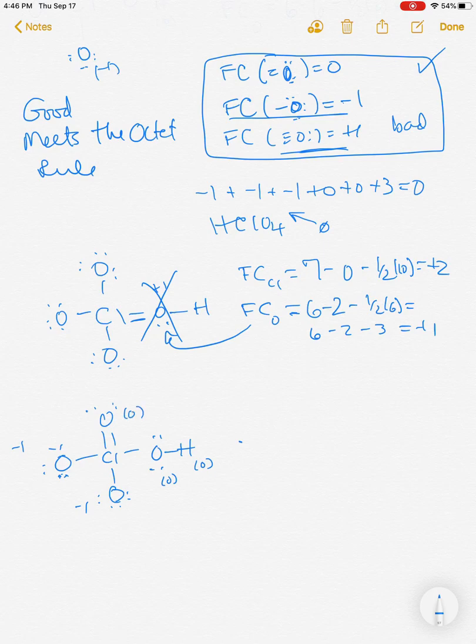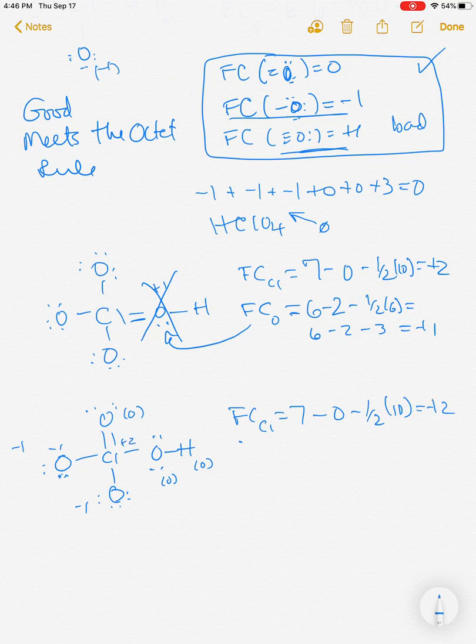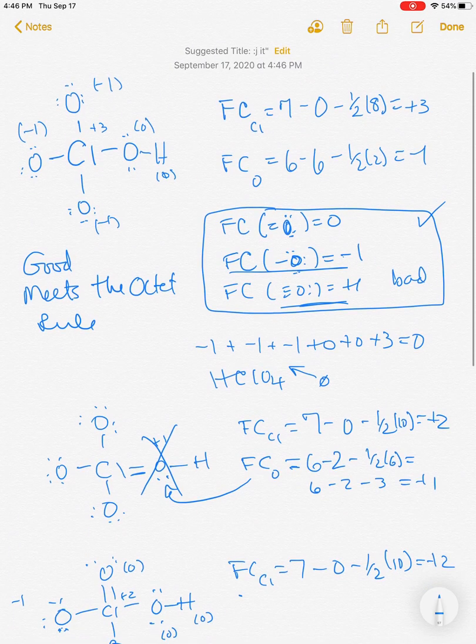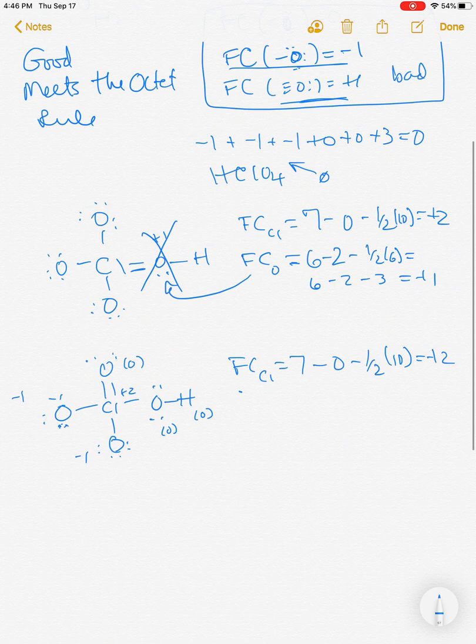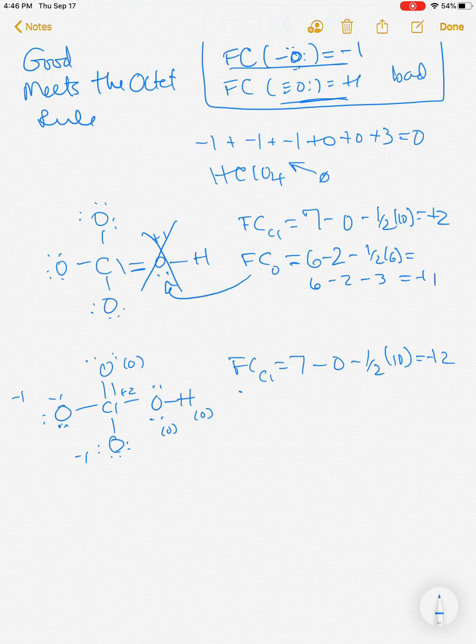Well, this is great. But what's my chlorine now? So let's figure out formal charge of chlorine. Seven minus zero minus a half of the one, two, three, four, five, the five electrons there or five bonds. So it's plus two. Oh, this is great. So I went from up here plus three charge now to plus two charge by adding a double bond.